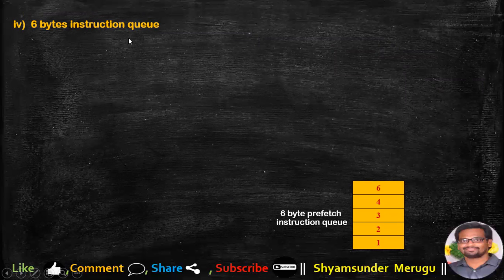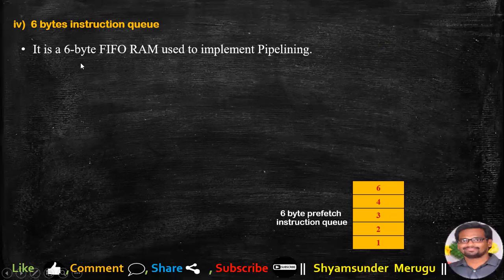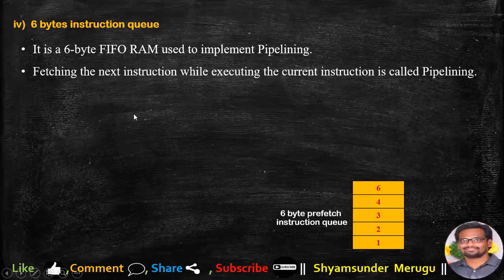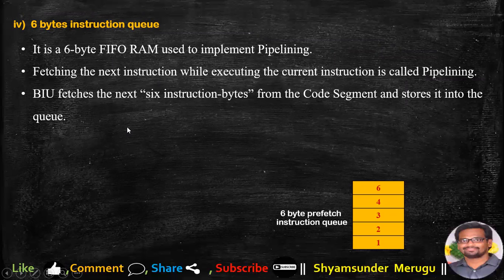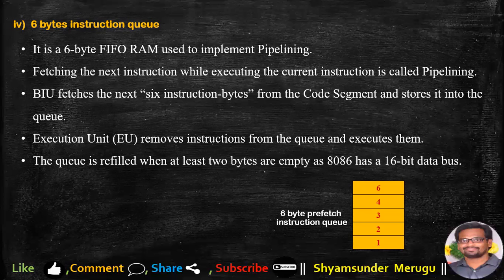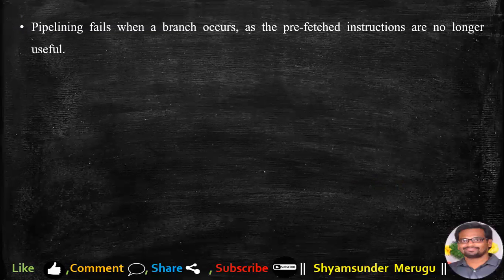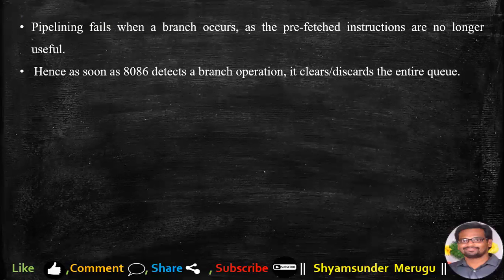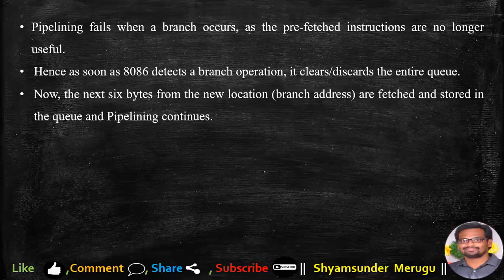Coming to the instruction queue, whose size is 6 bytes. It is a 6-byte first-in first-out RAM used to implement the pipelining process. Fetching the next instruction while executing the current instruction is called pipelining. The BIU fetches the next 6 instruction bytes from the code segment and stores them in the queue. The execution unit removes instructions from the queue and executes them. The queue is refilled when at least 2 bytes are empty, as 8086 has a 16-bit data bus. Pipelining fails when a branch occurs, so 8086 clears the entire queue, fetches the next 6 bytes from the new location, and pipelining continues.